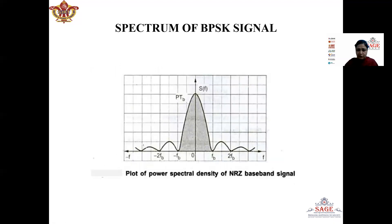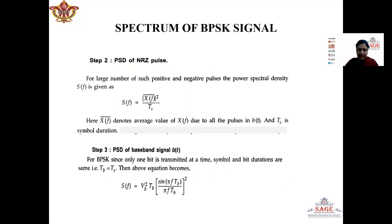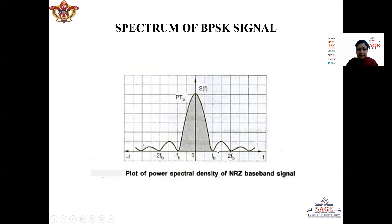Now when drawing the spectrum of the BPSK signal, we plot this power spectral density. The PSD is the square of the sinc function, which is a decaying sinusoidal signal. When we take the square, the negative portions also become positive. This is the power spectral density of the NRZ signal. The first zero crossing is at Fb, the second zero crossing is at 2Fb, and the maximum amplitude is given by P·Tb.